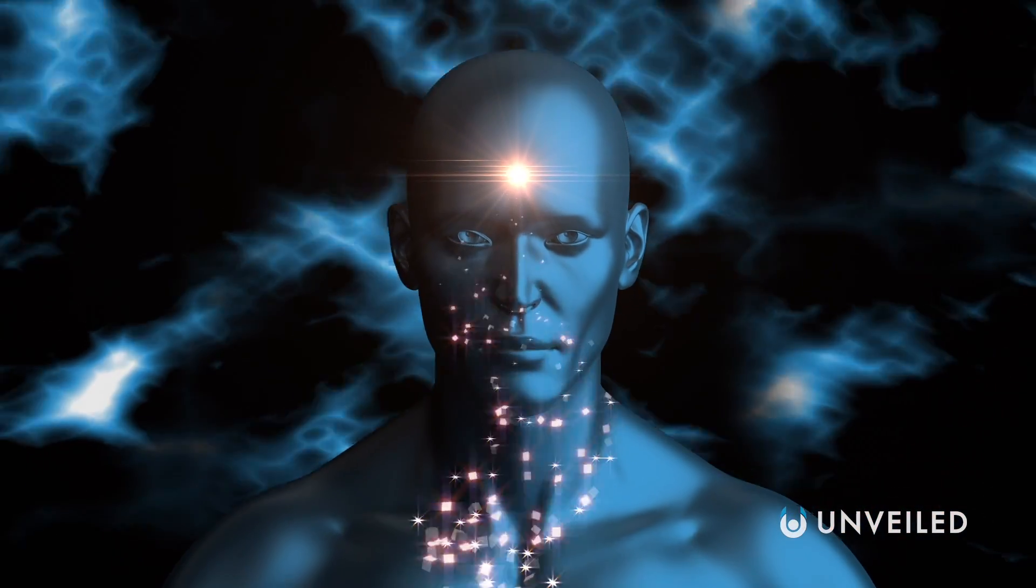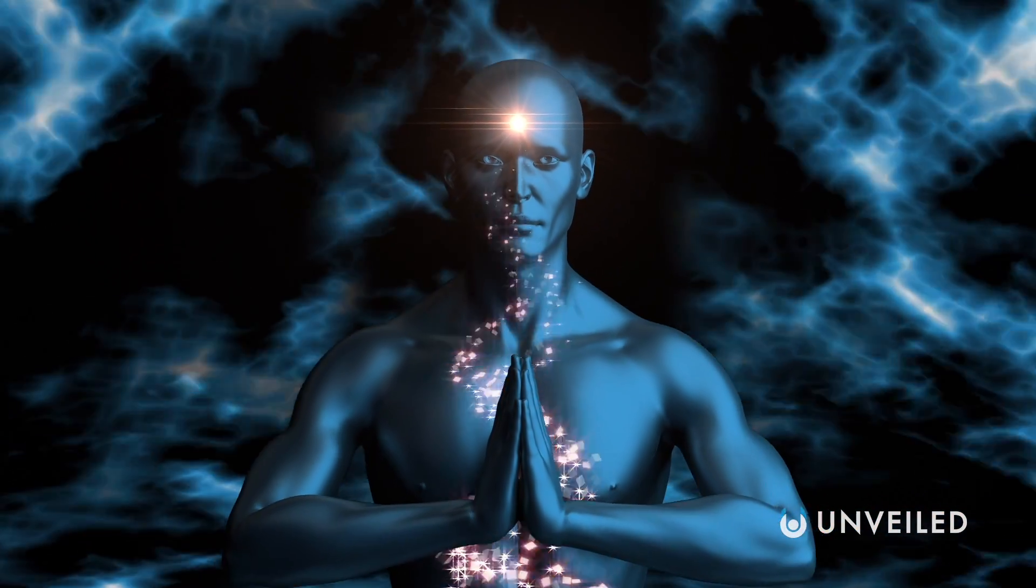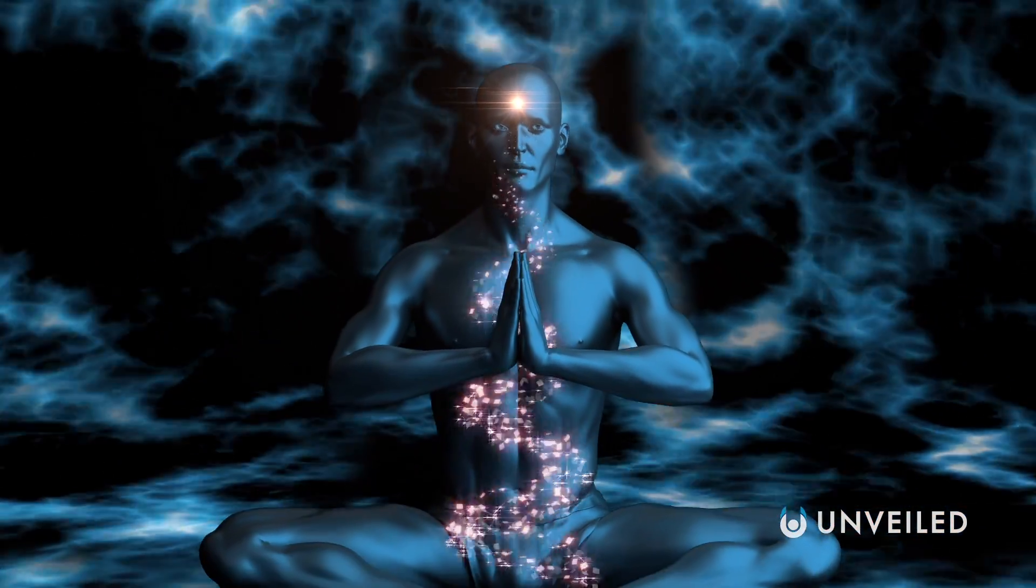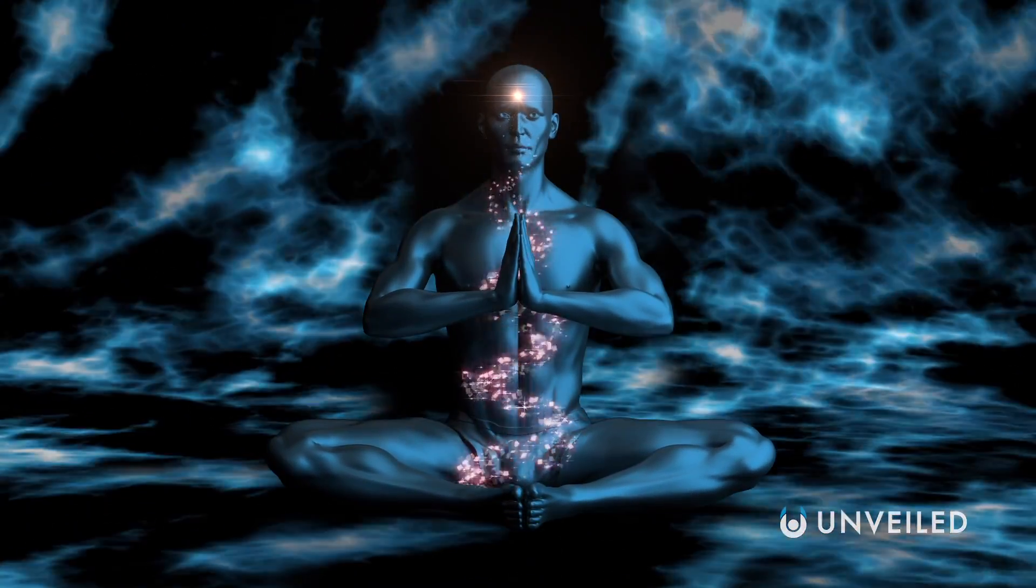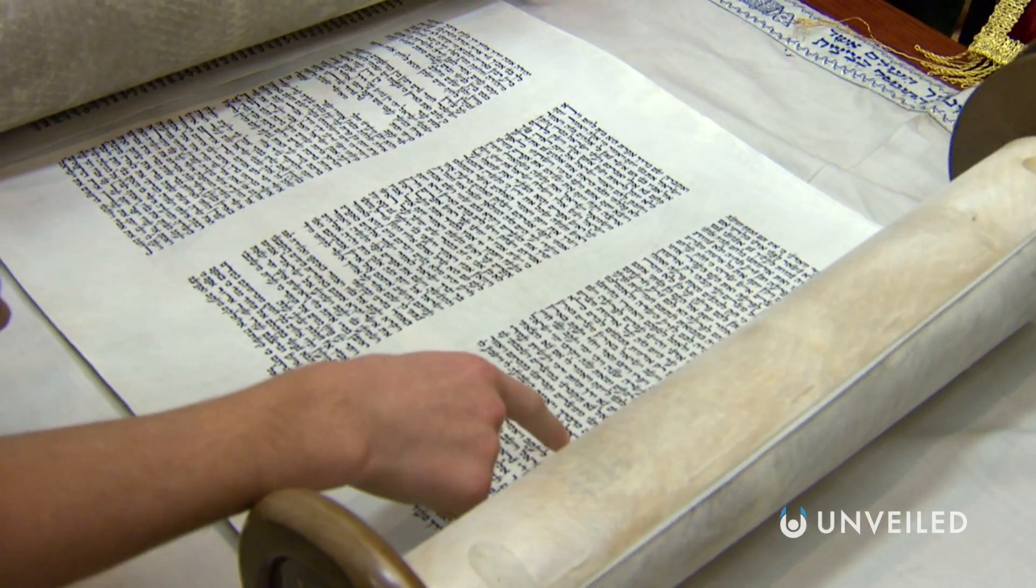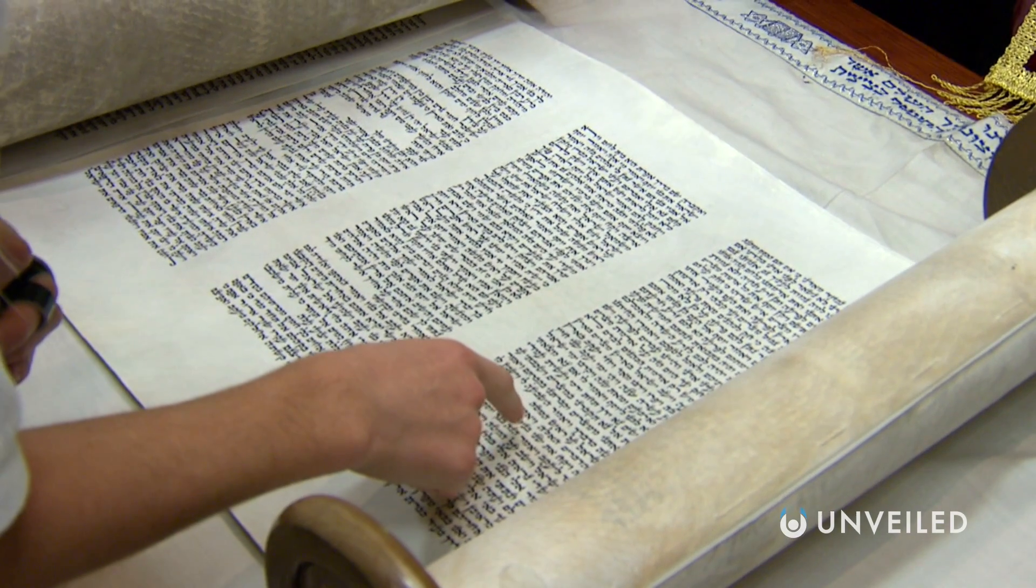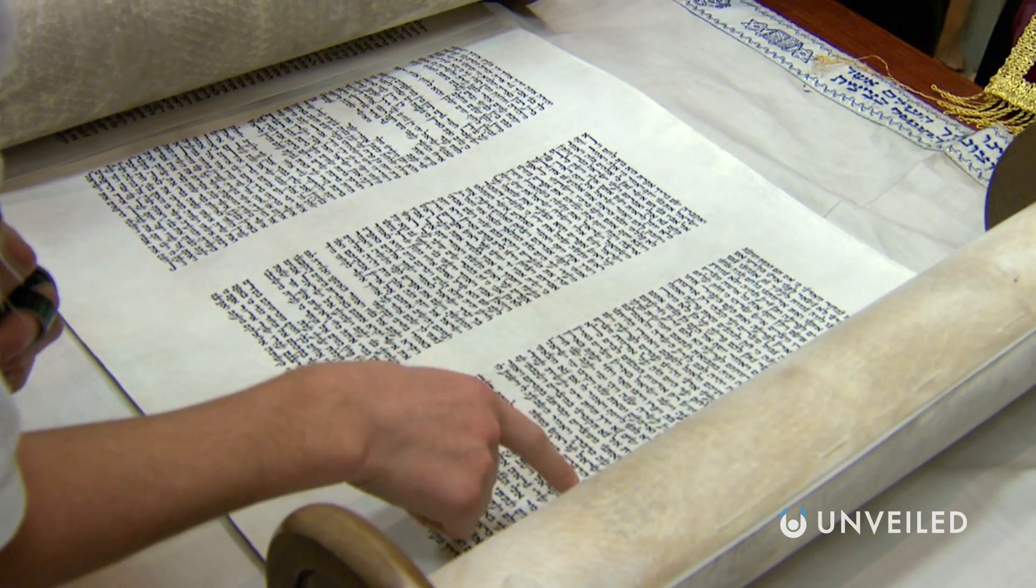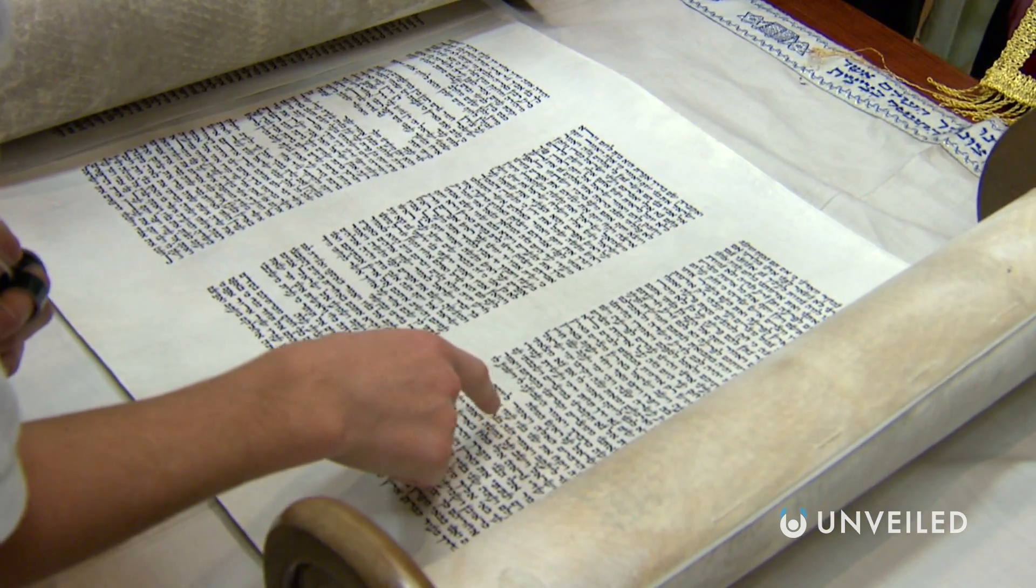Jain texts describe the universe as similar to the shape of a human body, with a narrow top that broadens out in the middle and bottom. The ancient Israelites saw the universe as a flat disk floating on a body of water, with the heavens high above and the underworld resting below.